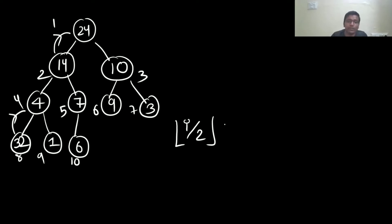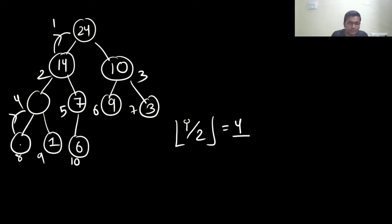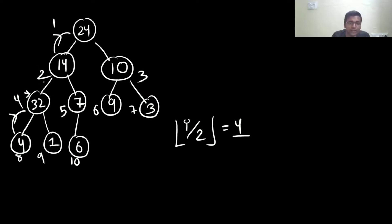I check with its parent: which is greater, 32 or the current parent value? 32 is greater, so I swap. After swapping, i had 32 and the other node had 4. Now after swapping, I check again with the next parent — that is i/2 = 2. Here 32 versus 14, so again swap: 32 comes up, 14 goes down. Then 24 comes here and 32 goes to the root.